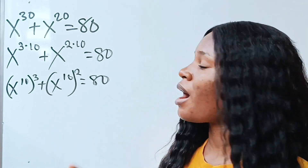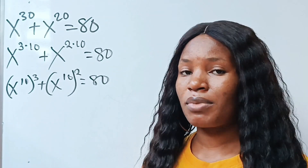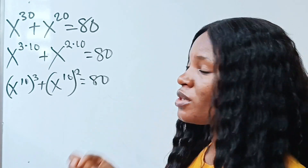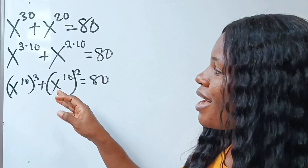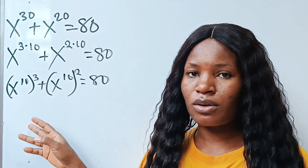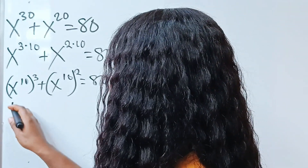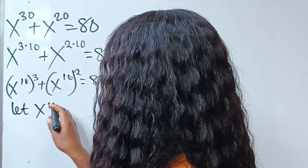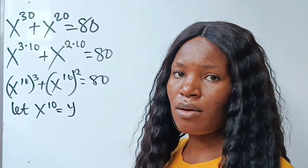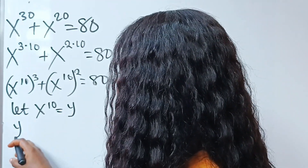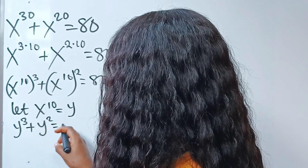At this point some of you might say we've formed a cubic polynomial — please stay tuned, because this question is very tricky. At a point you need to solve for x, not what I'm about to name. Now we are going to assign a substitution: let x to the power of 10 be equal to y. If we say that, then we have y to the power of 3 plus y squared is equal to 80.